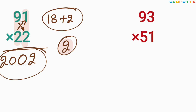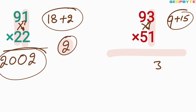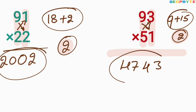Similarly, look at the other set: 93 multiplied by 51. First, multiply 3 and 1: equals 3. Cross multiplication: 9 into 1 is 9, plus 5 into 3 is 15 — equals 24. Write 4 here, 2 balance. Then multiply 9 and 5: 45, plus 2 balance is 47. So 4,743 is the value of 93 multiplied by 51.